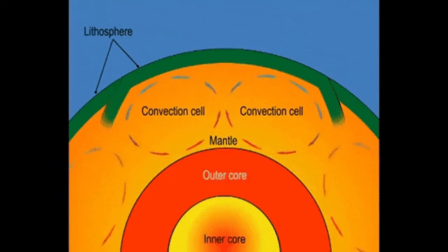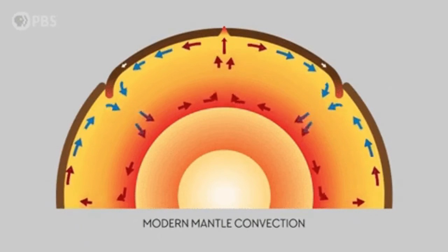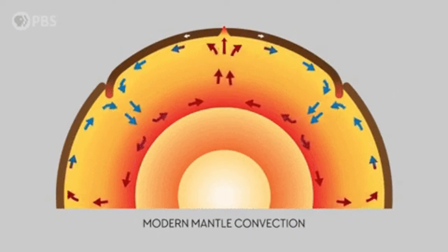The colder magma will go down and eventually be heated. Once its temperature increased, it will go up again. The cycle goes on and on, creating what we call convection current in the mantle.